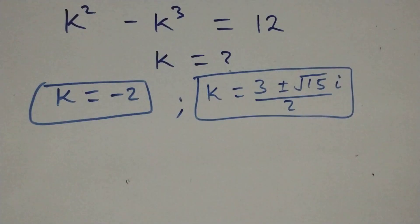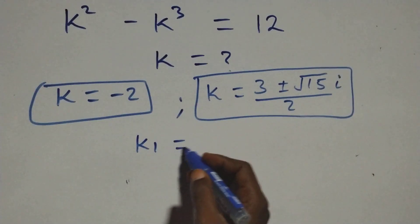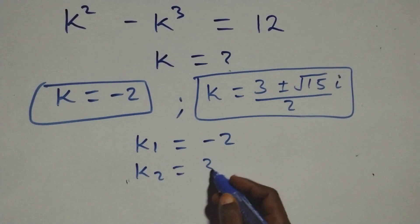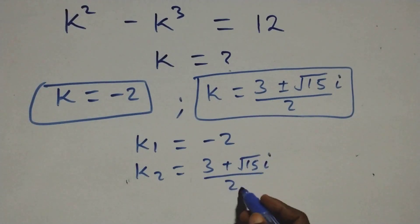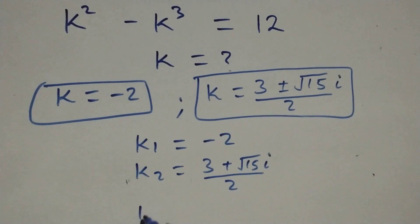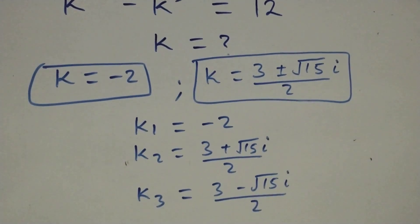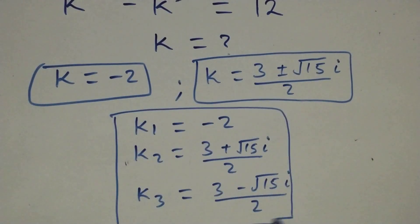All together we have 3 solutions in this given problem. We can write: k₁ equals minus 2, k₂ equals (3 + √15 · i) / 2, and k₃ equals (3 − √15 · i) / 2. So all together we have 3 solutions: 1 real and 2 complex solutions.